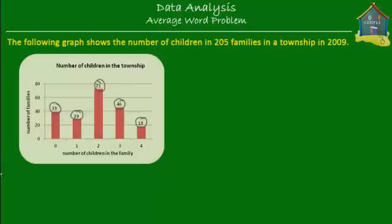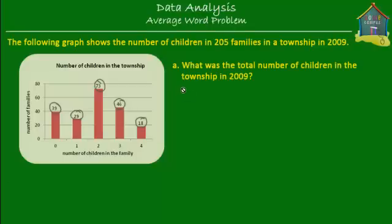Now let's see the questions. There are three questions; I'm going to do them one by one. The first question is: what was the total number of children in the township in 2009? This is pretty simple and straightforward. We know that there were 39 families with zero children each.